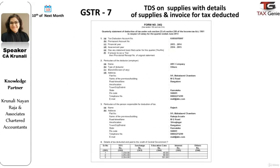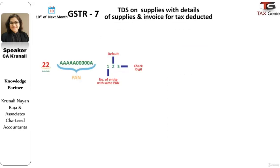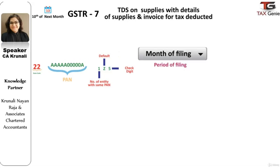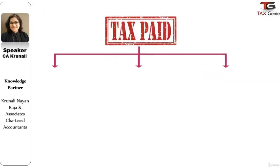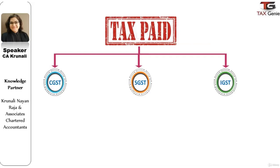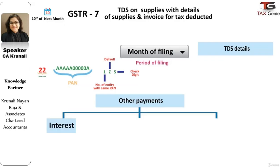The return would contain information like basic details of the taxpayer with the GSTIN number, period to which the return pertains, details of the GSTIN of the supplier along with the invoices against which TDS has been deducted, details of tax deducted against each major head — that is CGST, SGST, and IGST — and finally details of payments like interest, penalties, fees, etc.